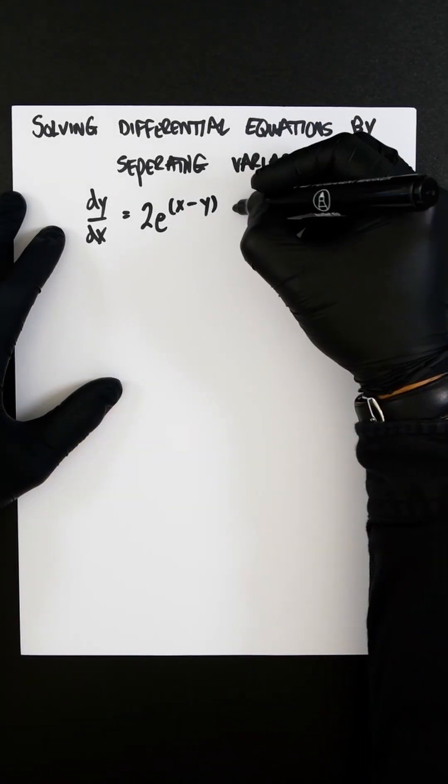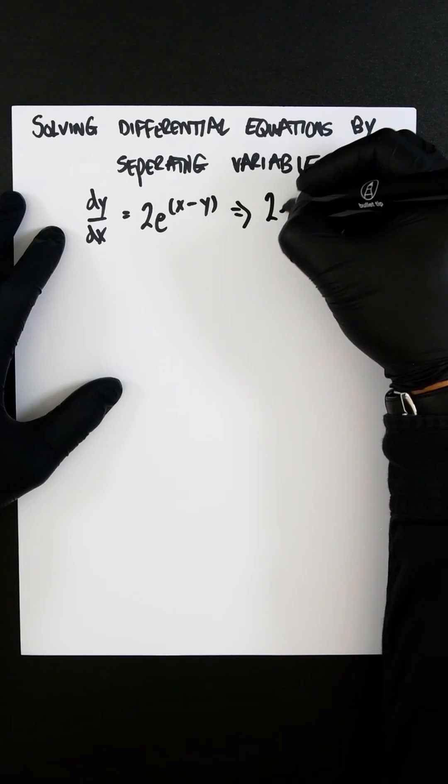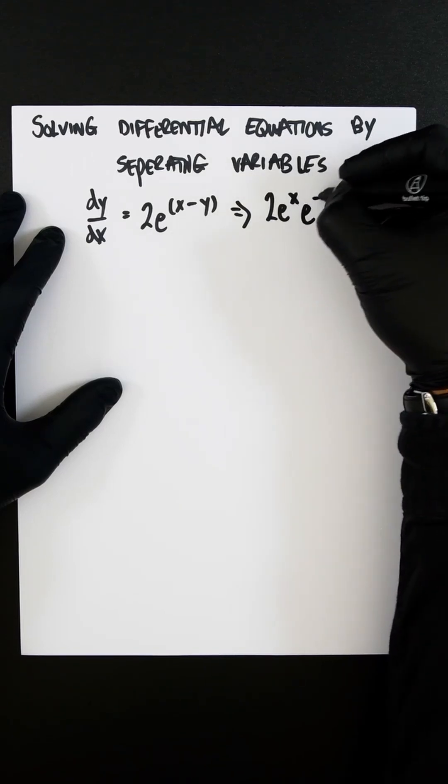Using the exponential rules, we can break this up. So it looks like 2e^x times e^(-y).